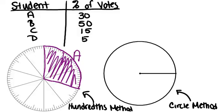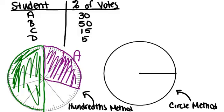Now I can go on to student B, who got 50% of the votes. Pick another color and shade in 50% of the circle for student B. Remember, 50% is half the circle or five of these wedges. Don't forget to label your different sections or it will have little meaning. You can also make a key off to the side.